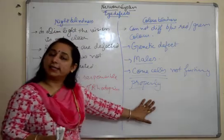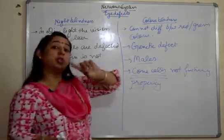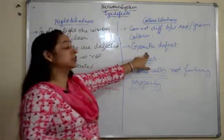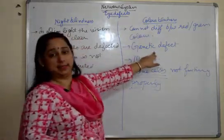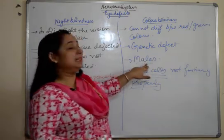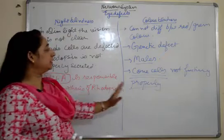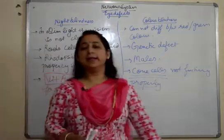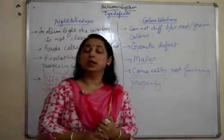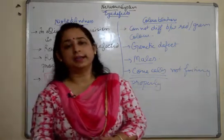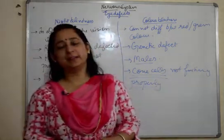So a very important question: name an eye defect which is genetic — the answer is color blindness. It is mainly found in males. This is the difference between night blindness and color blindness. In our next video, we will cover the structure and functioning of the ear. So keep watching, liking, sharing, and subscribing. Thank you.